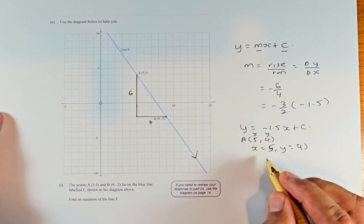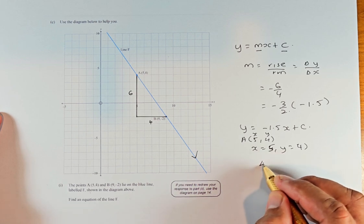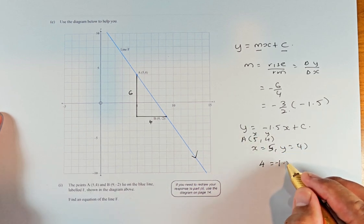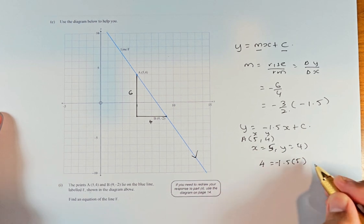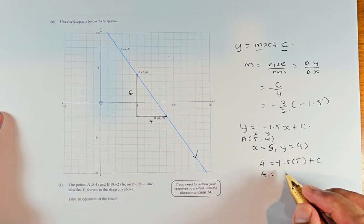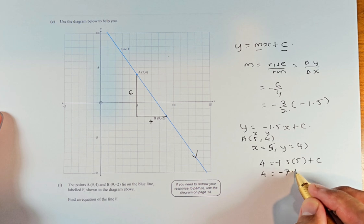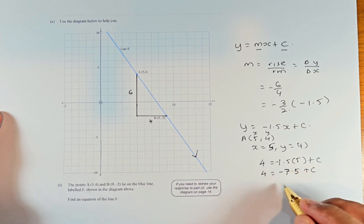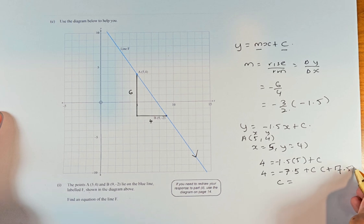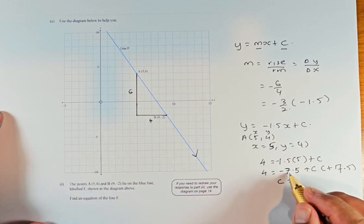So Y is now replaced by 4. 4 equals minus 1.5 times X, which is 5, plus C. Now we can solve for C. We're going to expand this part. 4 equals minus 7.5 (use your calculator: 1.5 times 5 is 7.5) plus C. When you add plus 7.5 on both sides of the equation, this will cancel out.